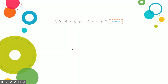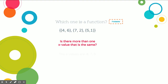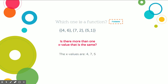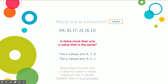Let's look at a few examples that go on the foldable. Looking at the x values — 4, 7, and 5 — those are all different, so we know that it is a function. The y values are 6, 2, and 1. Since there is only one unique x value for each of those y values, we know that this is a function.